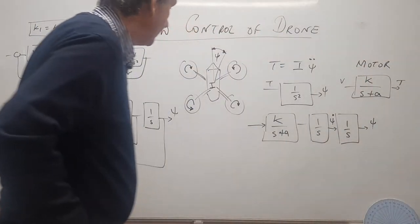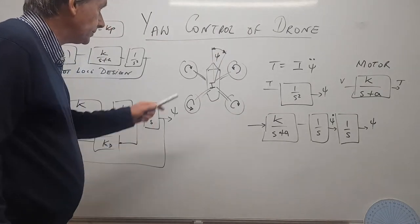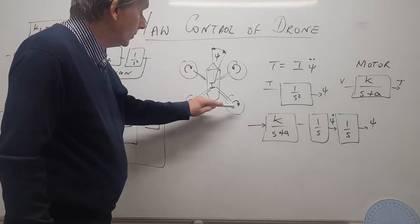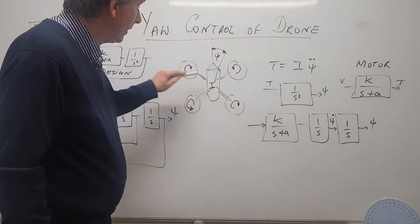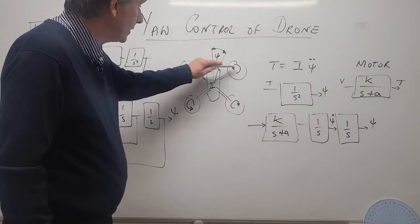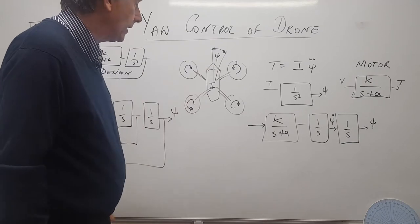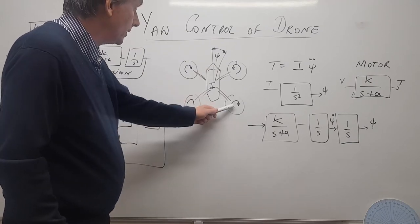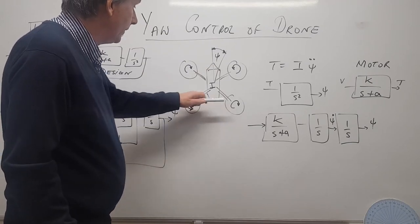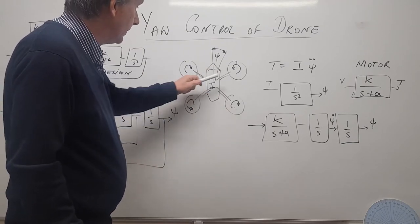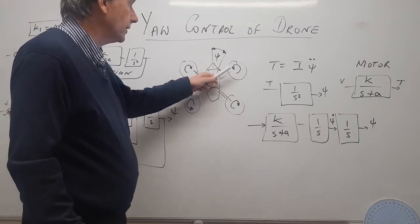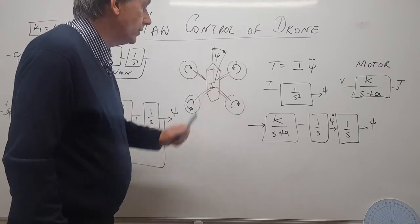Let's look at how it works. Two propellers go clockwise and two go anticlockwise. If we slow two of them down, there's less torque from those and more torque from the others, so the drone starts to yaw in the same direction as the faster pair.